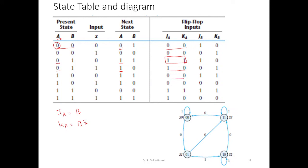Similarly, we can find out the inputs for flip-flop B and use them to find the next state of B. For example, when JB=1 and KB=1 it is complement — the corresponding value of B is 0, so the next state value will be 1. When JB=1 and KB=0, it will just maintain the previous state, so if B is 0 it remains 0 in the next state.